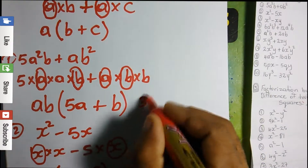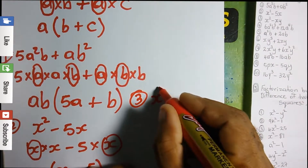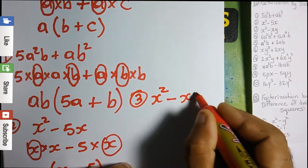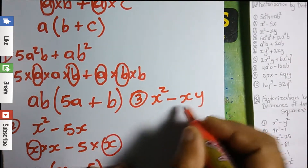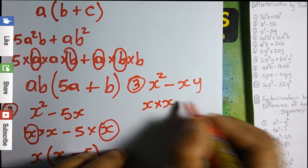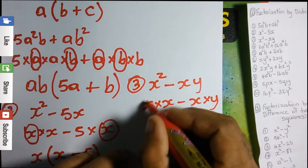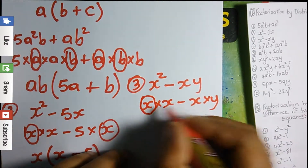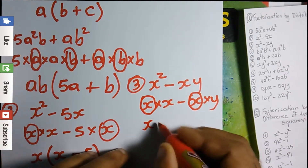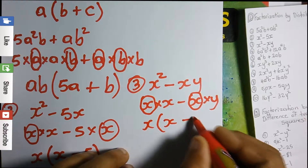Question 3: we have x² - xy. Expanding: x squared is x times x, minus x times y. x is common on both sides, so we pull out x, open a bracket, and write what's left: x - y. The answer is x(x - y).